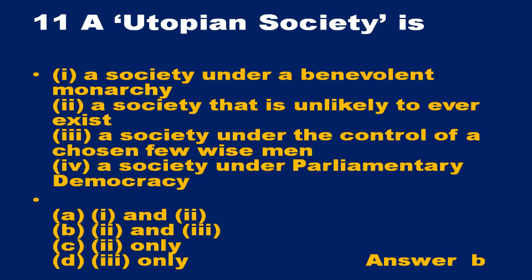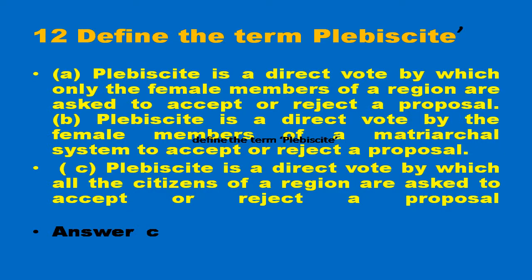Question number 11: What is a Utopian society? The answer is a society that is unlikely to ever exist, or a society under the control of a chosen few wise men. Question number 12: Define the term plebiscite. Plebiscite is a direct vote by which all the citizens of a region are asked to accept or reject a proposal.